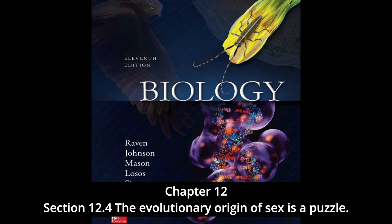As organisms became larger and longer lived, it must have become increasingly important to repair such damage. The synaptonemal complex, which in early stages of meiosis precisely aligns pairs of homologous chromosomes, may well have evolved originally as a mechanism for repairing double-strand damage to DNA, using the undamaged homologous chromosome as a template to repair the damaged chromosome. A transient diploid phase would have provided an opportunity for such repair. In yeast, mutations that inactivate the repair system for double-strand breaks also prevent crossing over, suggesting a common mechanism for both synapsis and repair.